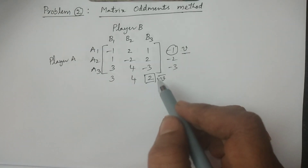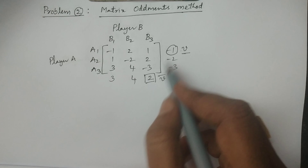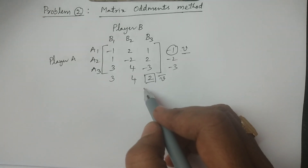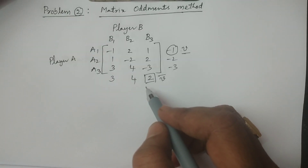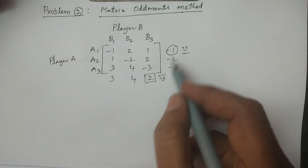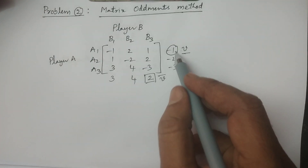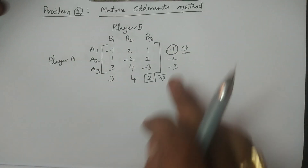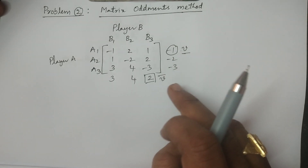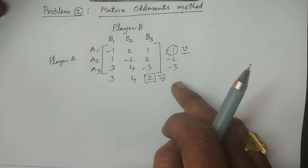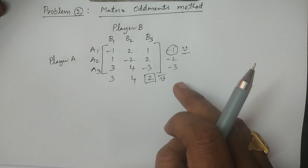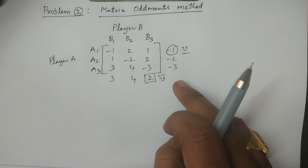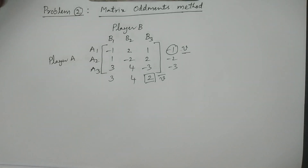So the maximin is minus one and minimax is two. The value of the game lies between minus one and two. Since the maximin and minimax are not equal, the saddle point does not exist for this particular game.